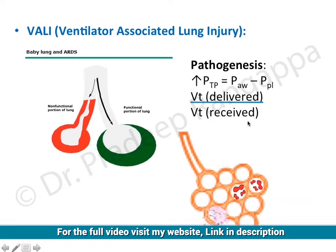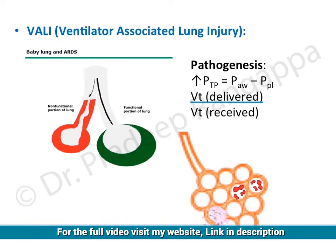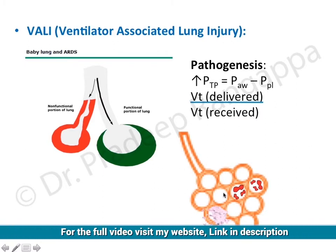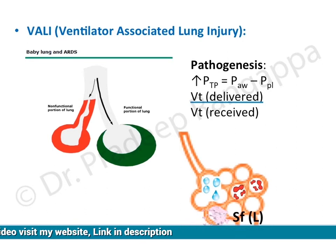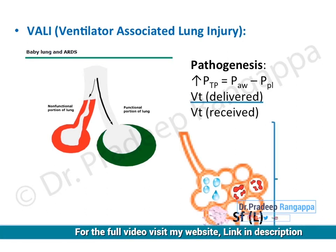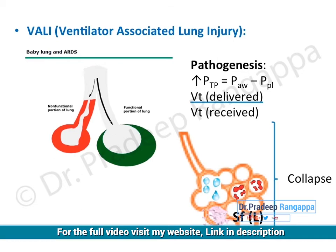When there is a huge difference between what is delivered and what is received, and that leads to increased transpulmonary pressure, there are a lot of changes that happen at the alveolar level. In a patient with VALI, the alveoli are typically flooded with hemorrhage, there is hyaline membrane formation, edema, and surfactant loss. These four remain the important pathognomonic changes in ventilator-associated lung injury.